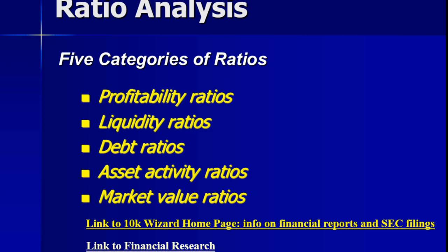These are the categories: profitability, liquidity, debt, asset activity, and market value ratios. We're going to go over all of those, and a lot of these ratios are in the Zoom simulation, so this should help you understand how to interpret your results in the overview page. The scores of the individual practice rounds were pretty low, which is expected the first time. Team scores are usually much higher, and as you go through the class learning about accounting, finance, and financial ratios, you start to learn how to make changes in your company to get better scores.